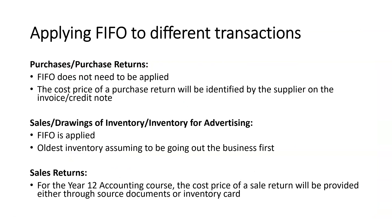So applying FIFO to different transactions. For purchases and purchase returns, FIFO does not need to be applied because the cost price is identified by the supplier through source documents — so on our invoices or credit notes, where there is a price given, we record using that. For most transactions in the 'out' section, including sales, drawings of inventory, or inventory for advertising purposes, we apply FIFO, and this is where the oldest inventory is assumed to be leaving the business first.